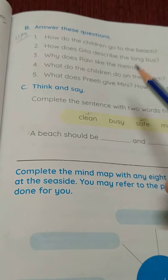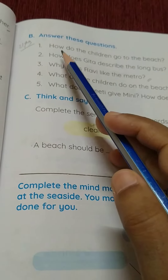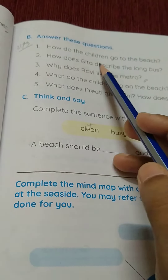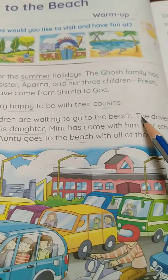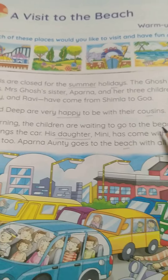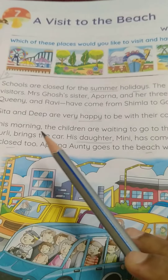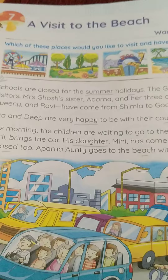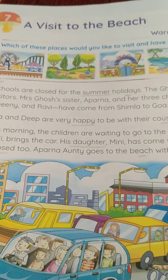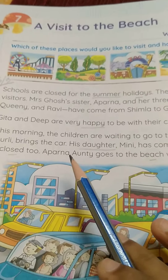The first question is: how do the children go to the beach? The children go to the beach by car.